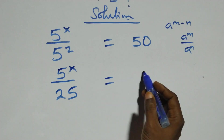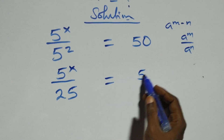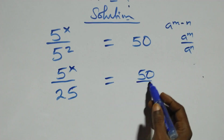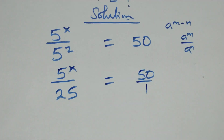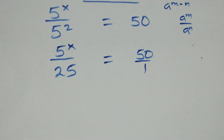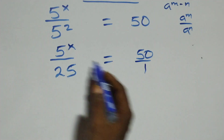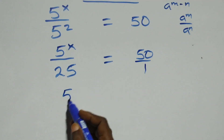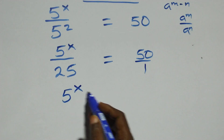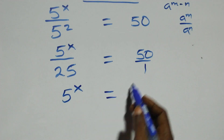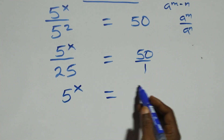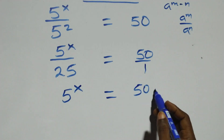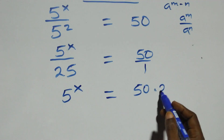Then we can write this as 50 over 1. From here we cross multiply: 5 raised to power x times 1, which is the same as 5 raised to power x, equals to 50 times 25.